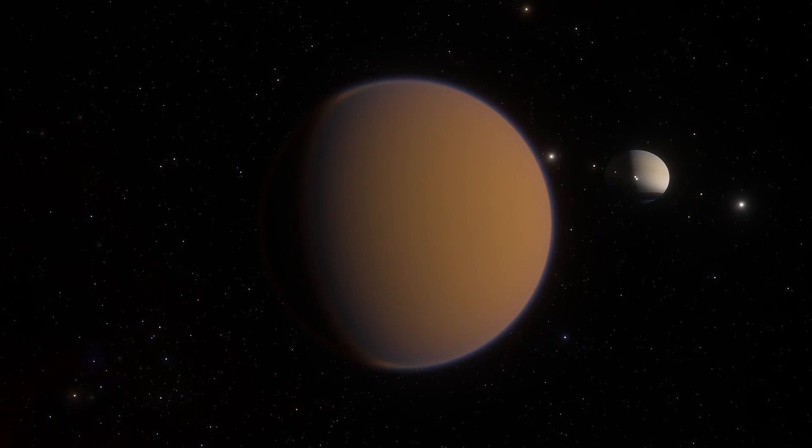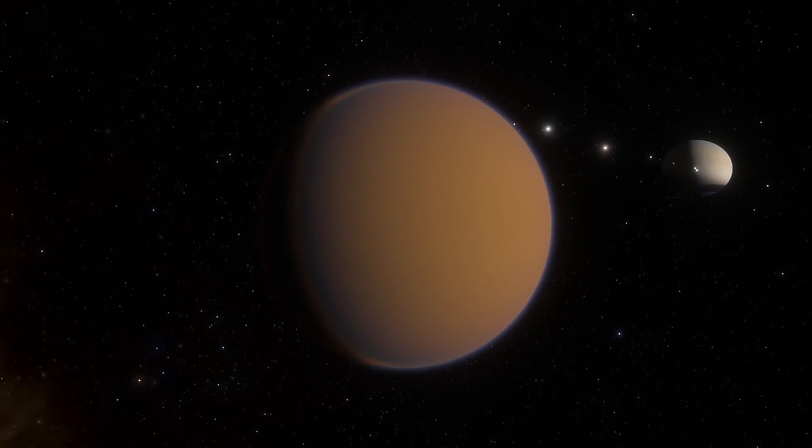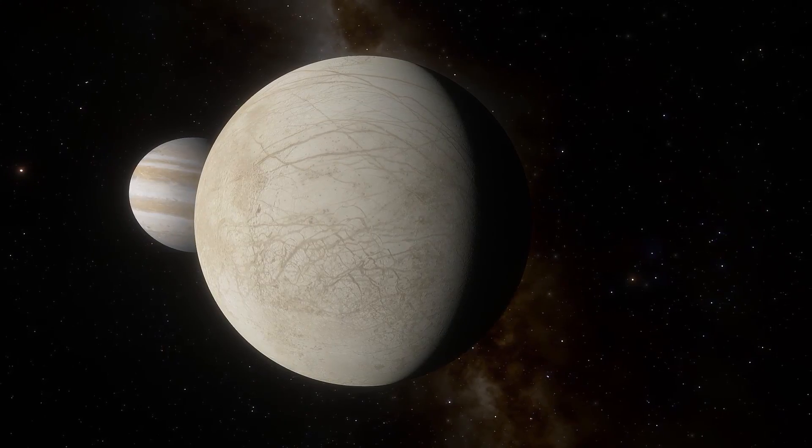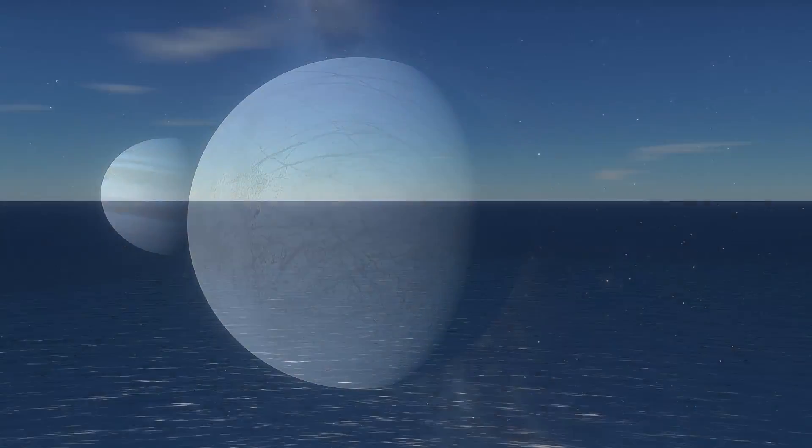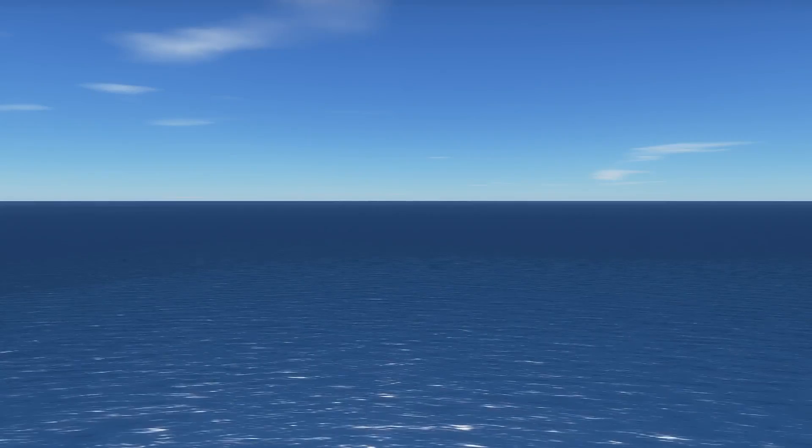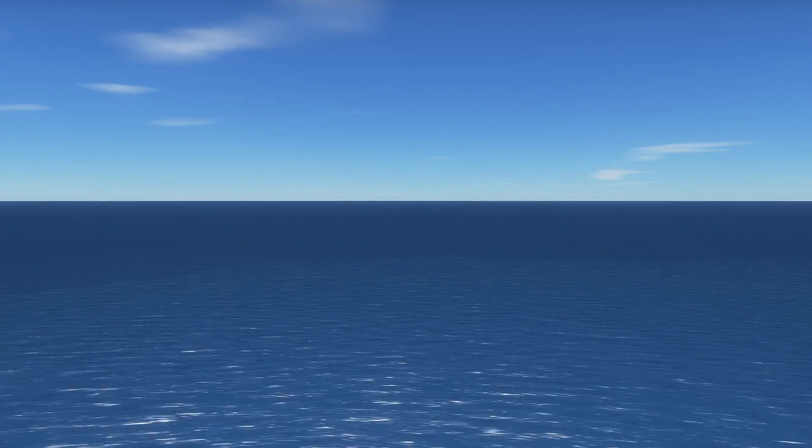It is thought that Theia was an object from the outer solar system, being similar to objects such as Titan and Europa, being mostly comprised of ices and carbonaceous chondrite-like material. This likely was the main source of Earth's water, and it also brought the carbon compounds which are the building blocks of life to Earth, which then led to the conditions for abiogenesis to be possible.